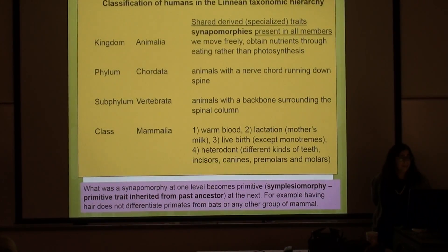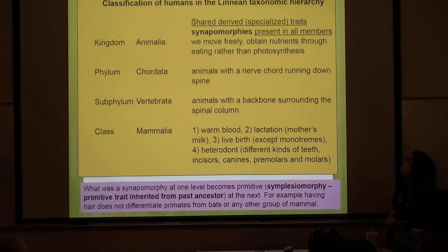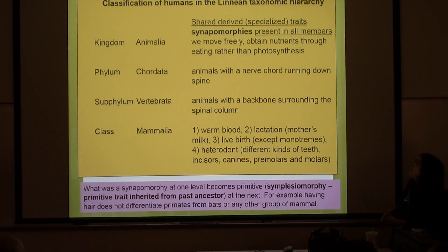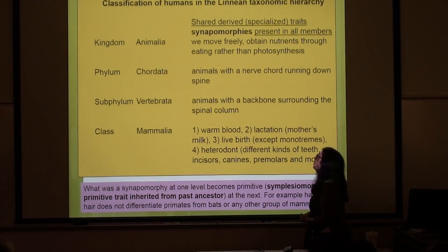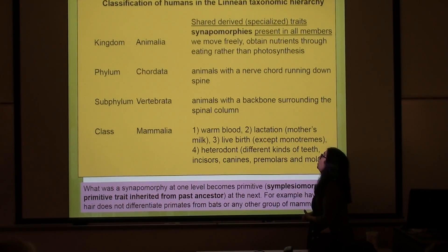Starting from the biggest one — Mammalia — how we define it, the shared derived synapomorphies: we all can move freely and we don't use photosynthesis. We can't get our nutrients through chlorophyll; we have to get them through eating food. So all animals move and eat. For Chordata, there is that nerve cord down the spine — that's a derived trait for all members of the phylum Chordata.